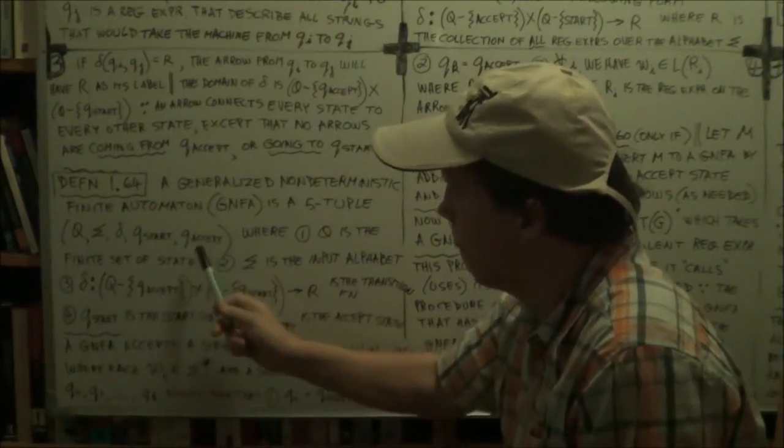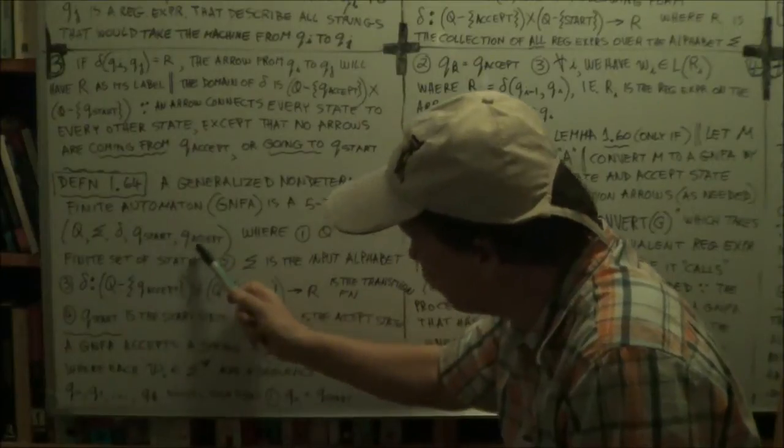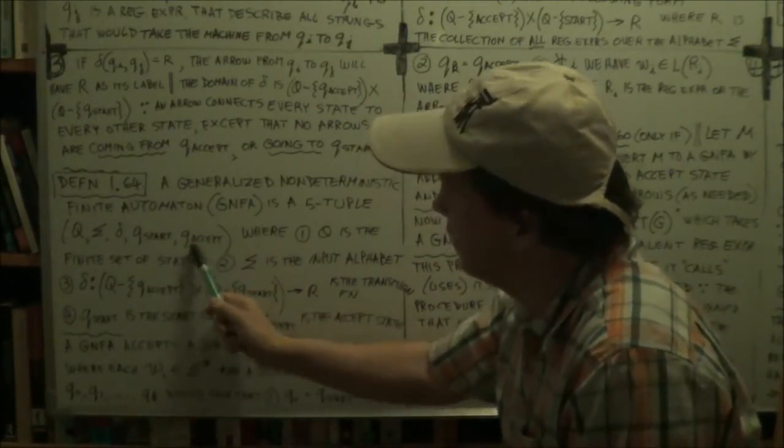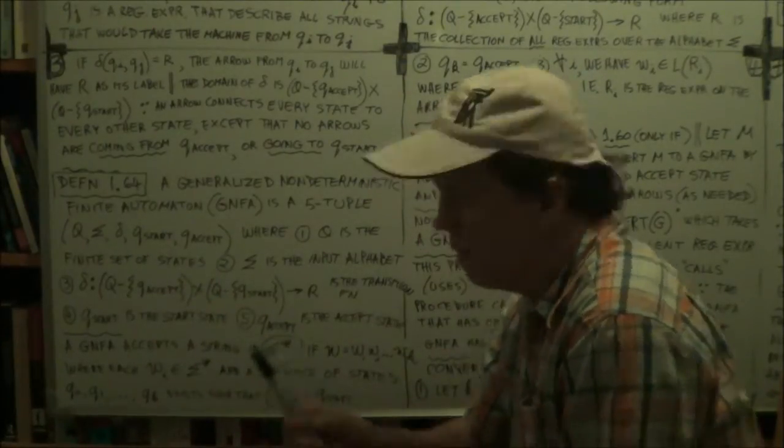Okay. So it's the GNFA start state, the extra one you add. And similarly, there's just one, and there's no set here. There's just one. Right. So that's different. There's no wiggly brackets. It's just a single accept. And it's not even a set. It's just a state.